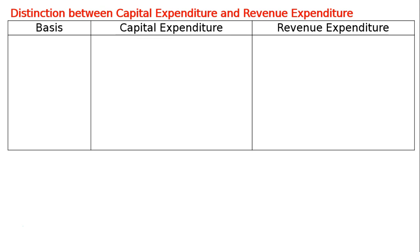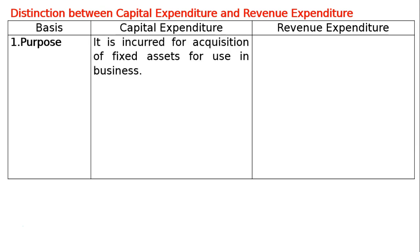The first basis of distinction is purpose. In case of capital expenditure, the purpose is it is incurred for acquisition of a fixed asset for use in business. In case of revenue expenditure, the purpose is it is incurred for the running of a business.